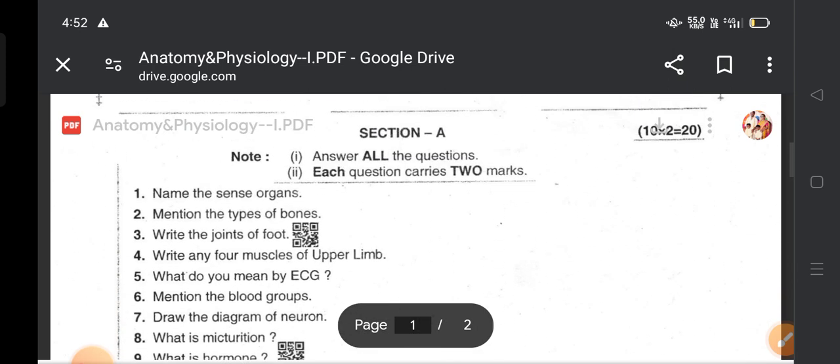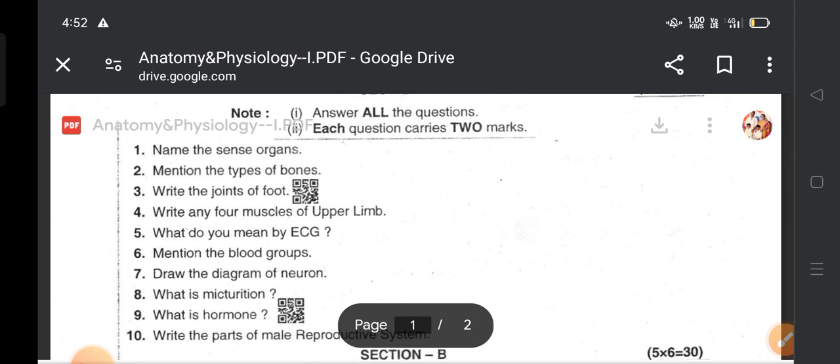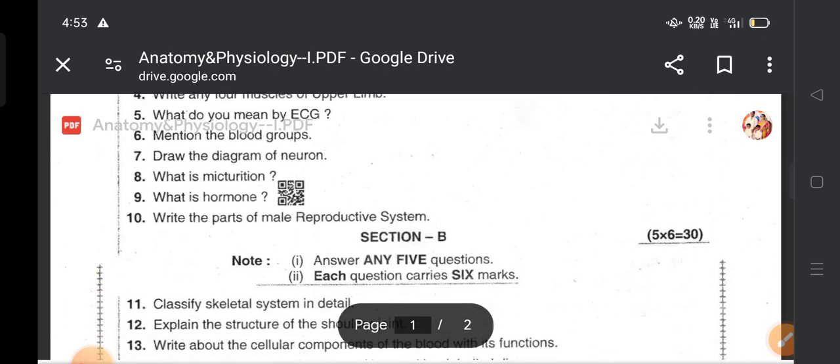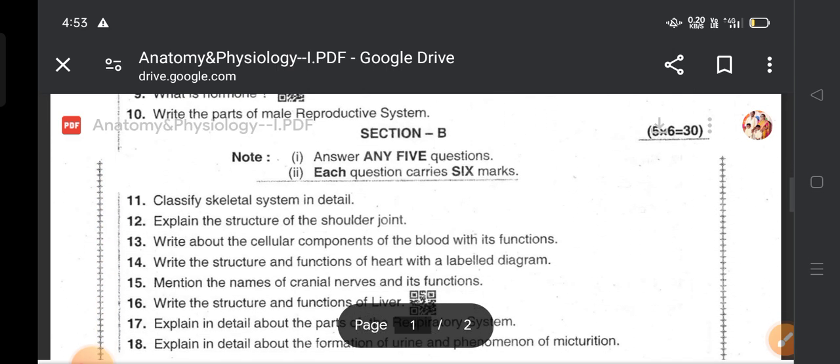Let me see them one by one. Name the sense organs. Mention the types of bones. Mention the joints of foot. Write any four muscles of upper limb. What do you mean by ECG? Mention blood groups. Draw the diagram of neuron. What is micturition? What is hormone? Write the parts of the male reproductive system.